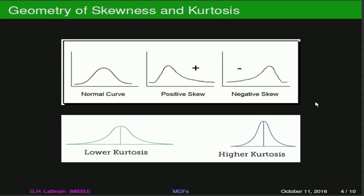Skewness and kurtosis have geometric implications. Skewness being zero means that we've got something that's very symmetric about the mean. Positive skewness means the tail of our distribution is skewed to the right. Negative skewness means our tail is skewed to the left. For kurtosis, it gives us an indication of how peaked our particular distribution is. A lower kurtosis means our distribution is kind of flat with larger tails. For a higher kurtosis, we've got a much more peaked distribution with fewer observations out along the tails.